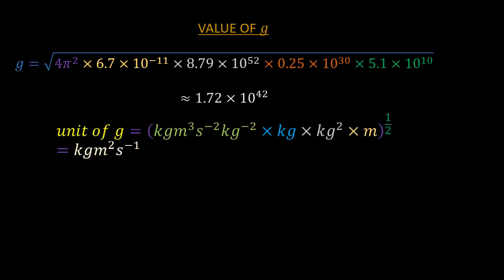So, we get kilograms meter square, per second square, per kilogram square, times kilograms, all raised to the power one half. This produces the same unit as that of H, which is kilograms meter square per second, which is equal to the unit joules second.